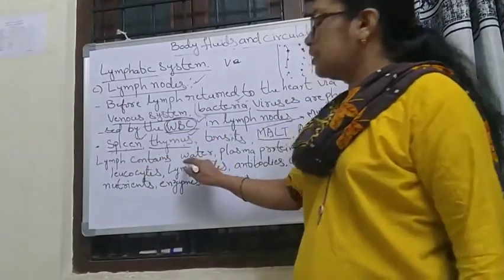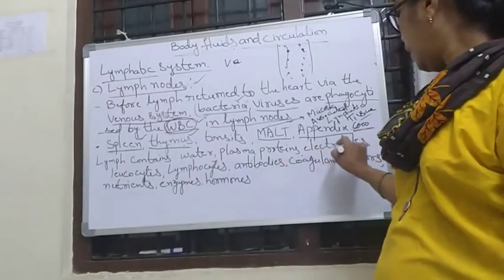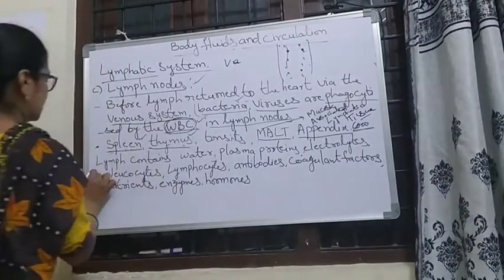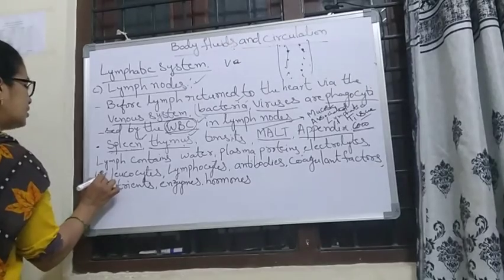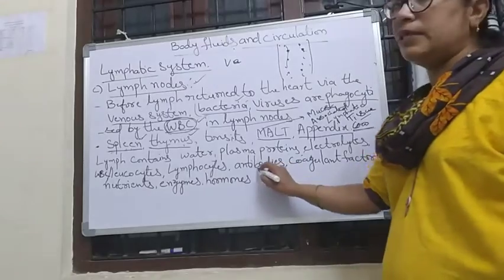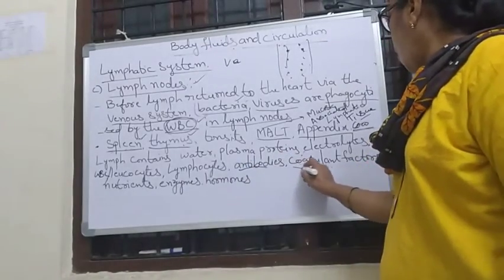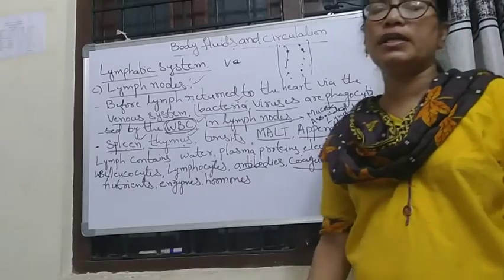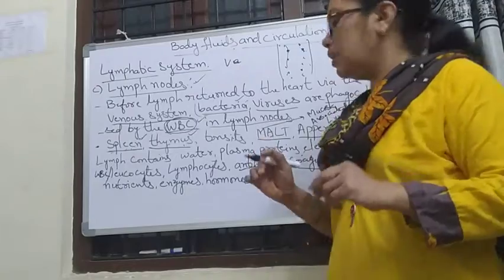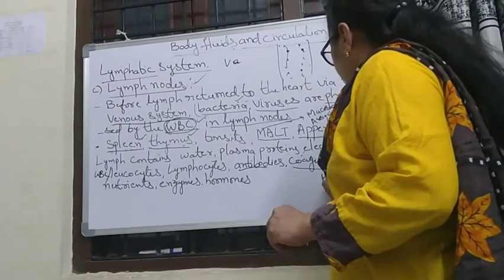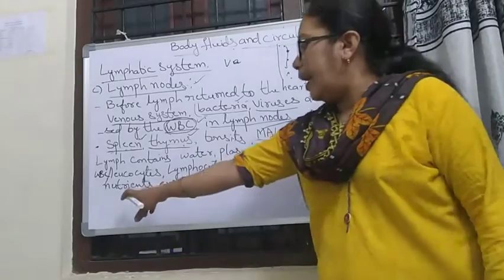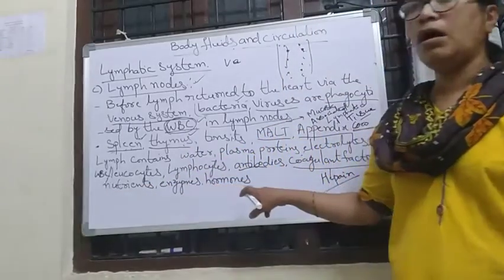Mainly, lymph contains water, plasma proteins, electrolytes, and leukocytes — leukocytes means WBC. It also contains lymphocytes and antibodies, as well as coagulant factors. Coagulant means factors which help in coagulation — clotting — such as heparin, which is present in lymph. Lymph also contains nutrients, enzymes, and hormones.